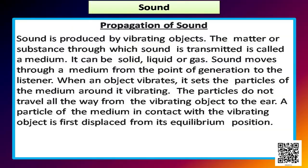Now we will find how sound propagates. Sound is produced by vibrating objects. The matter or substance through which sound is transmitted is called a medium. It can be solid, liquid, or gas. Sound moves through a medium from the point of generation to the listener.